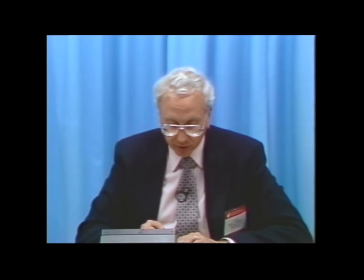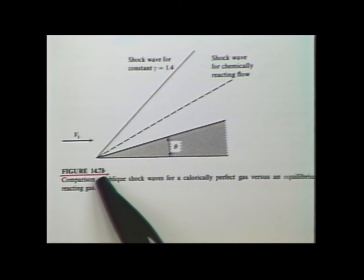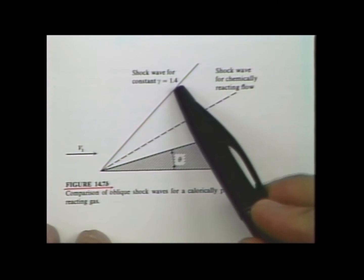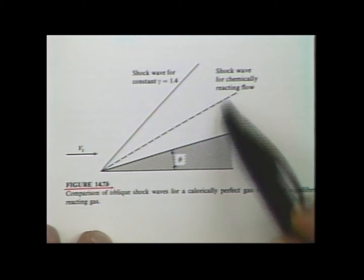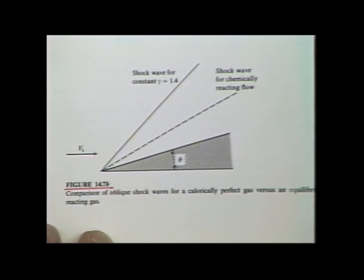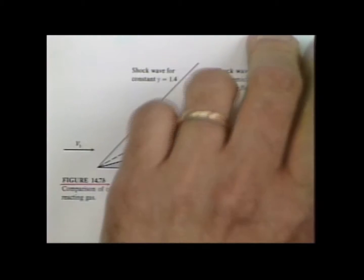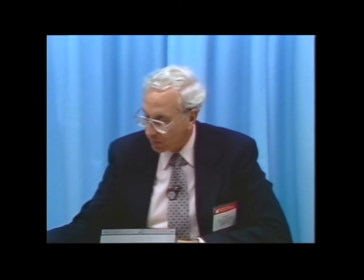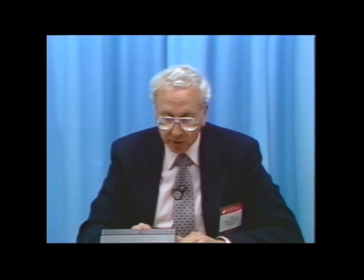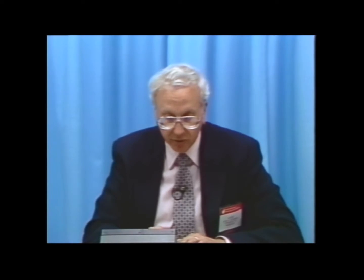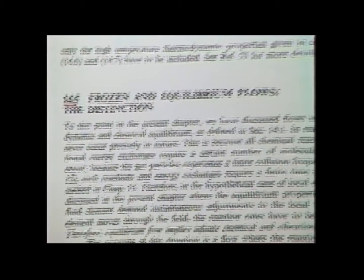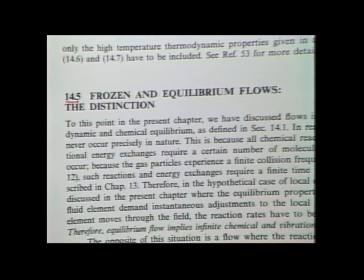Figure 14.7 shows that the same thing applies to oblique shock waves over a wedge. For gamma equals 1.4, you have the shock at a certain position; for the chemical reacting gas the shock wave lies closer to the surface because the density ratio across the wave is higher. Now, there's a section in your book, page 527, section 14.5, that deals with frozen and equilibrium flows. Whenever you're dealing with high-temperature gas dynamics, you will always encounter these words — equilibrium flow and frozen flow. Let's clarify what we mean.